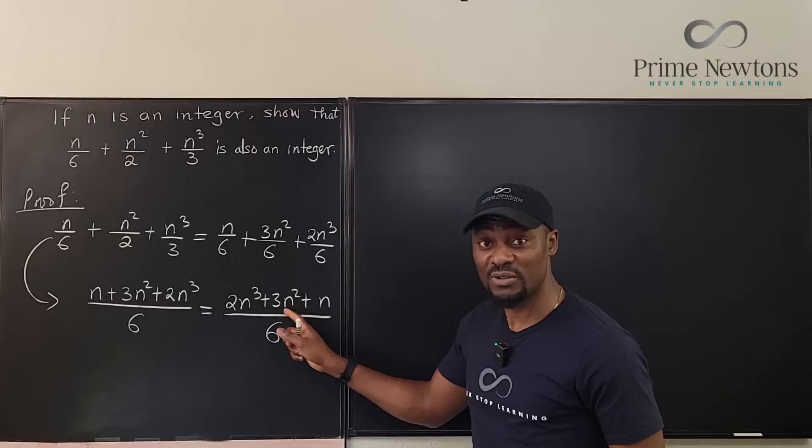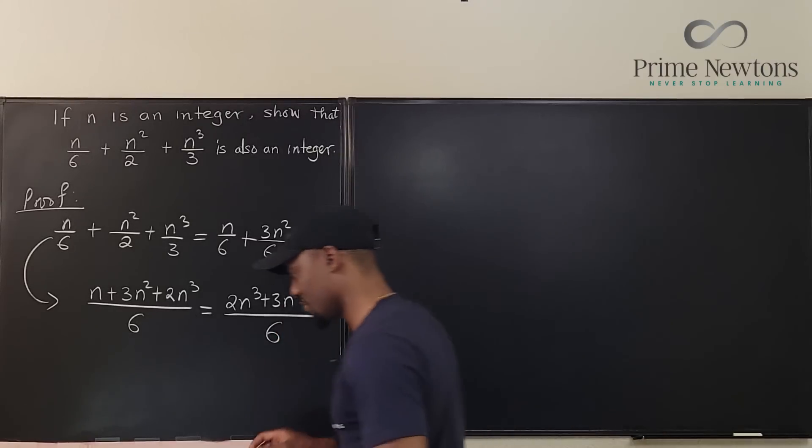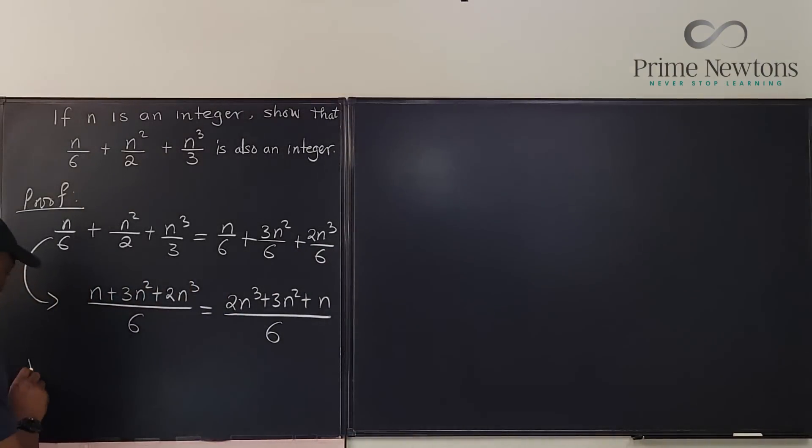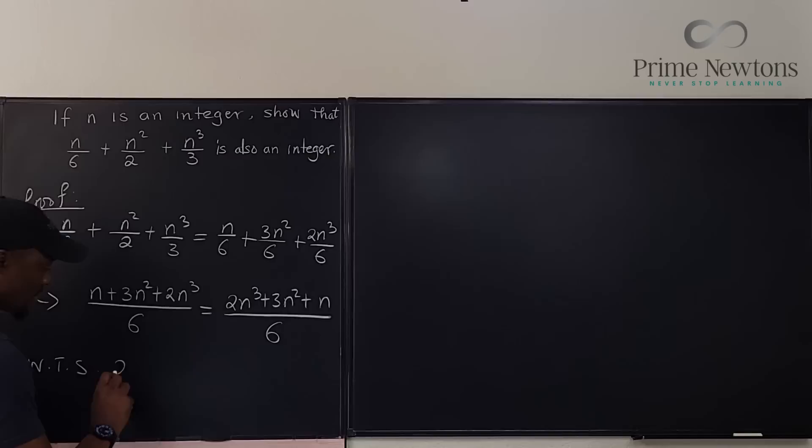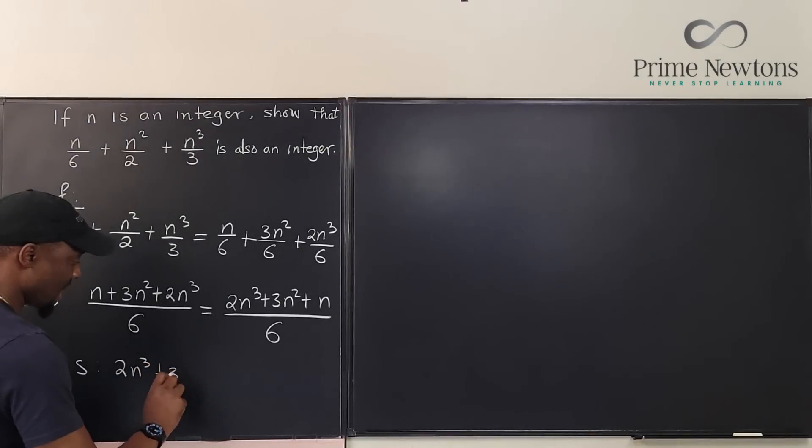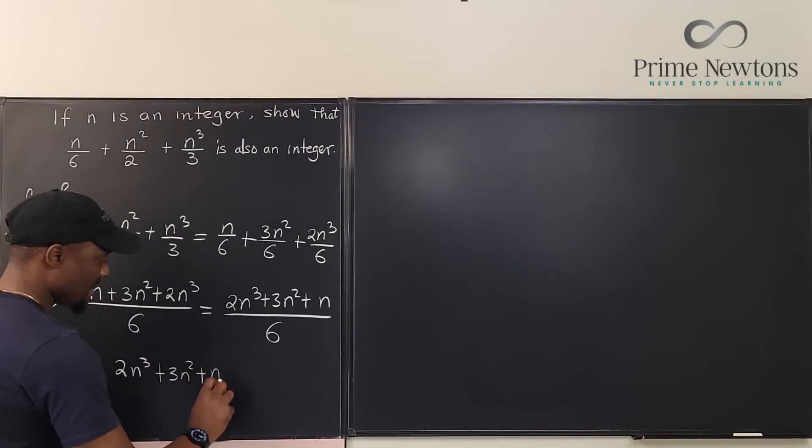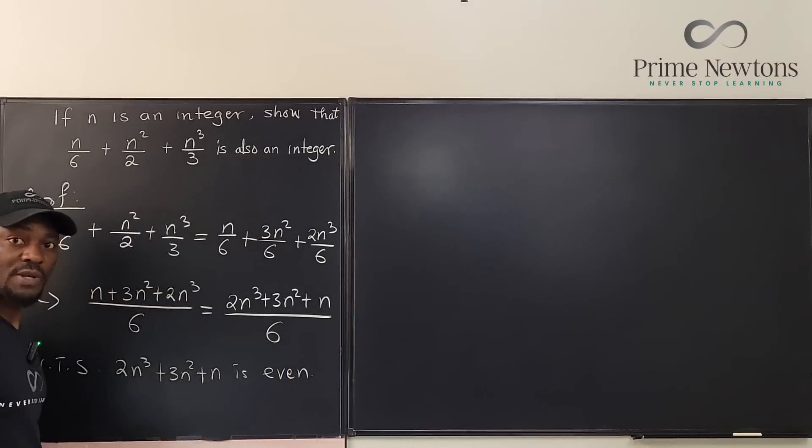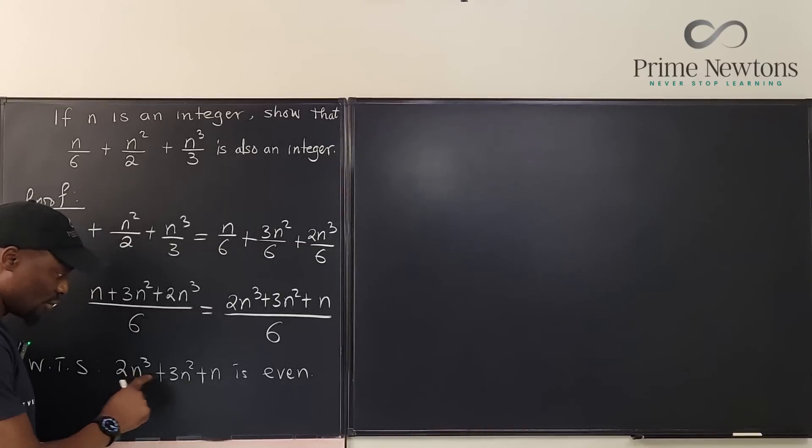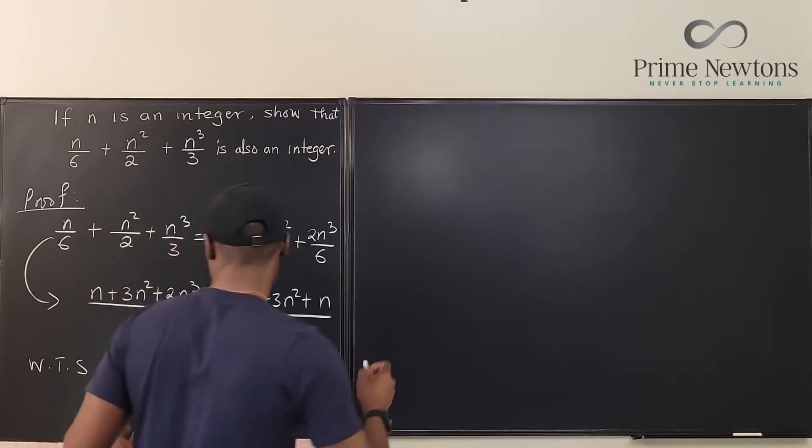There's an easier way to show that it's divisible by 2. I want to show that 2n cubed plus 3n squared plus n is even. I'm going to try to factor this.